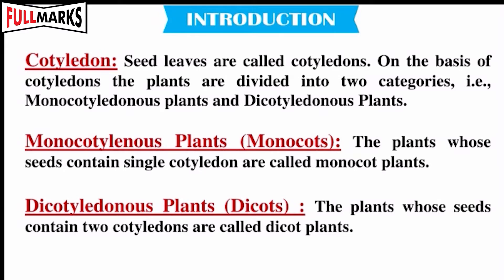The plants whose seeds contain a single cotyledon are called monocot plants. The plants whose seeds contain two cotyledons are called dicot plants.